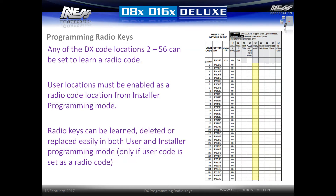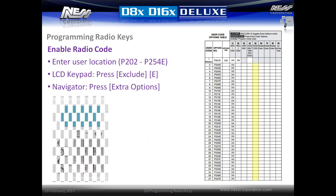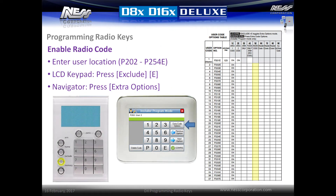Any of the DX code locations from 2 to 56 can be set to learn a radio code. User locations must be enabled as a radio code from installer programming mode. Radio keys can be learned, deleted, or replaced easily in both user and installer programming mode, but only if the code has been enabled as a radio code by the installer. To enable a radio code, enter the user location from p202e to p254e and enter the user codes.